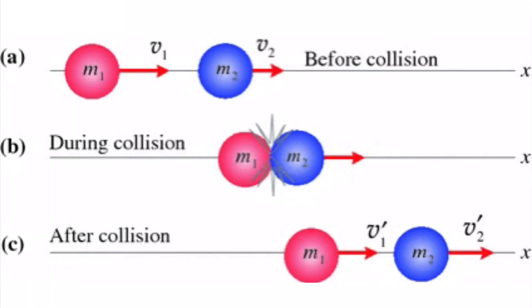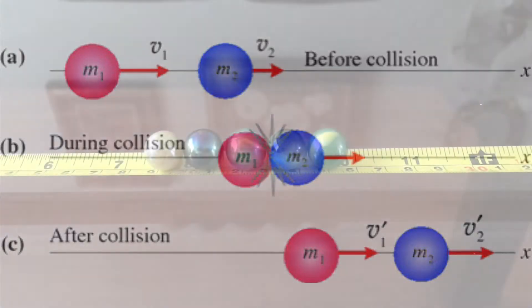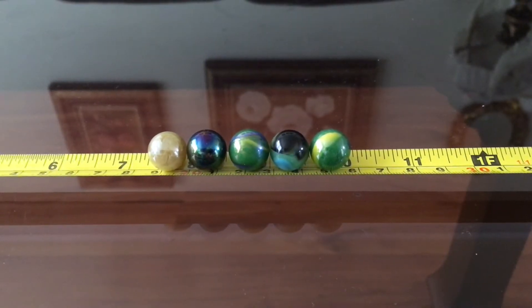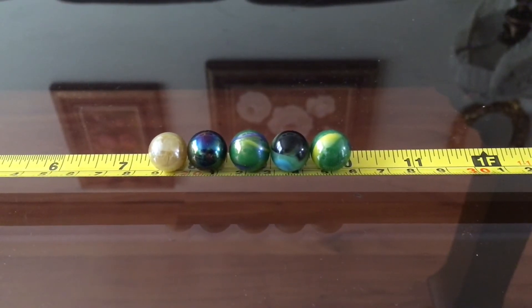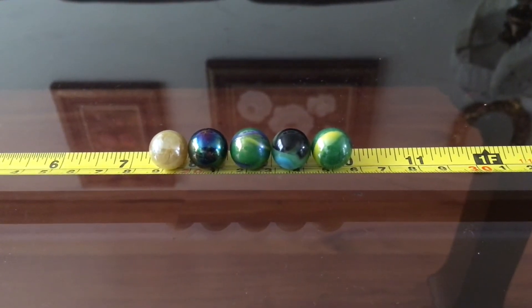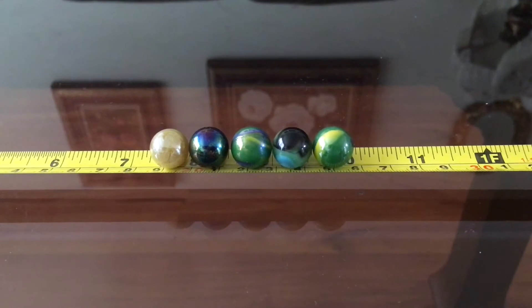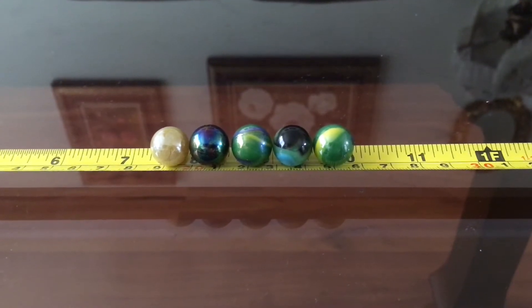Hello! Today I'm going to perform an easy experiment using some marbles in order to explain how collision and the law of conservation of momentum works. As you can see, I have some marbles placed together in a row. They are all of the same size, mass and shape.